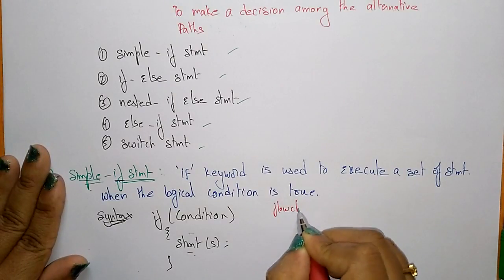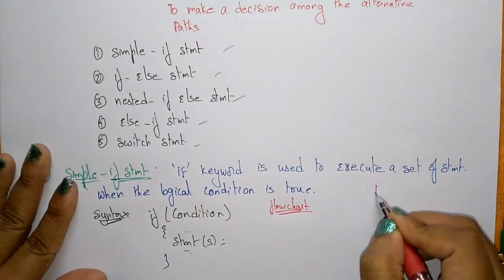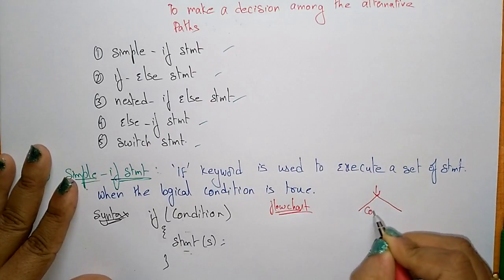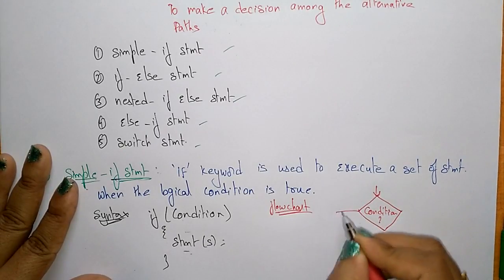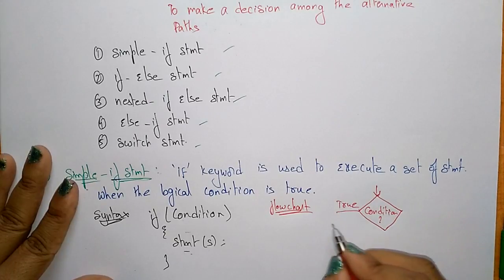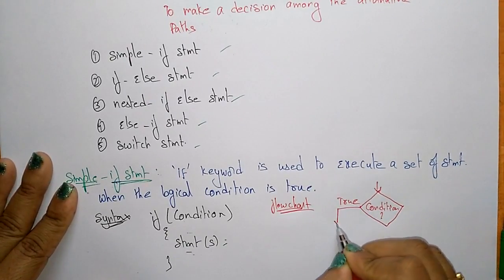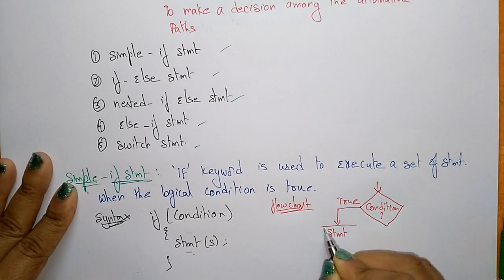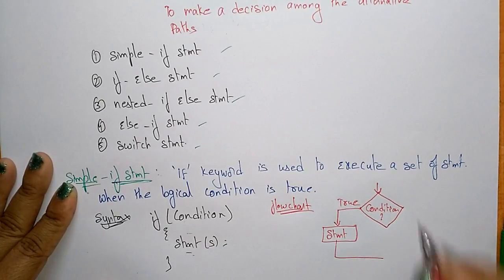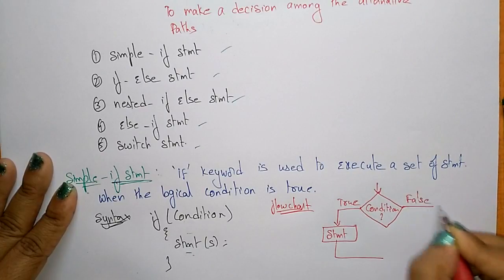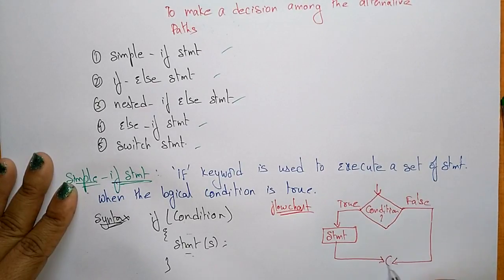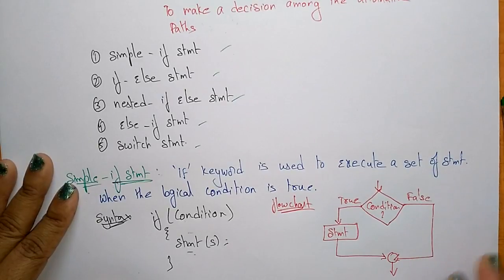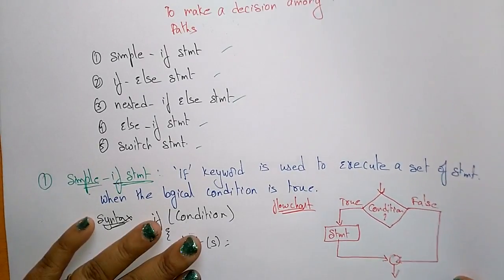Now let's see the flowchart for the if statement. First it checks the condition. Whenever the condition is true, it executes the statements. If the condition is false, it skips the statements block and continues with the remaining steps in the program. That is the if statement.